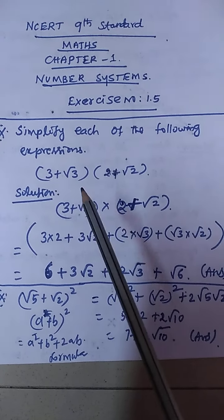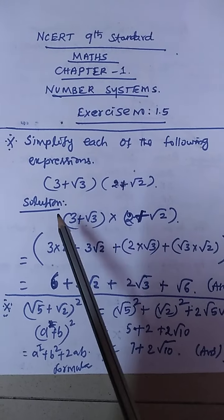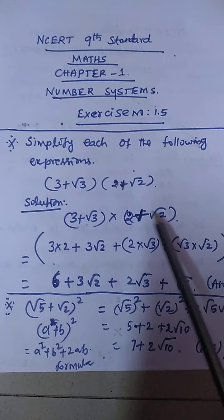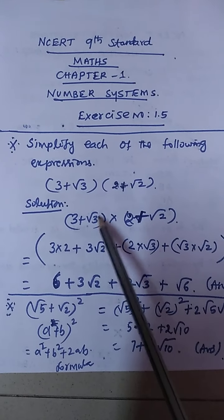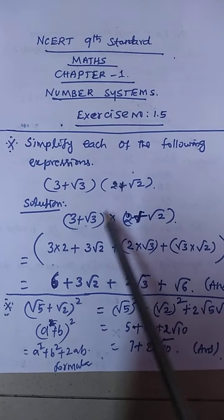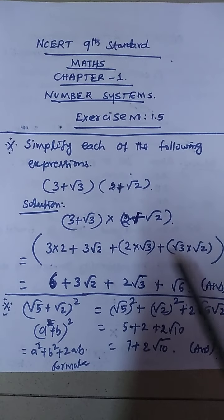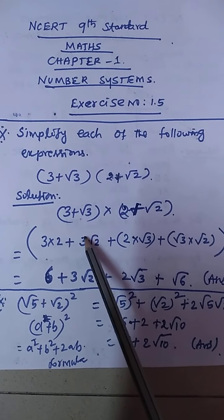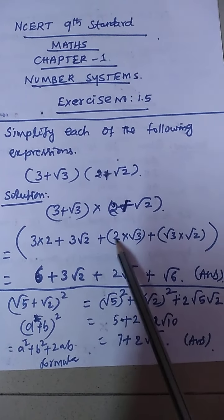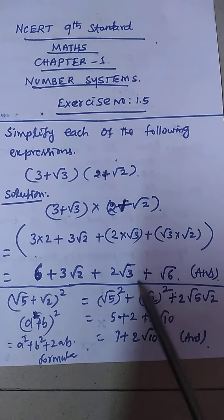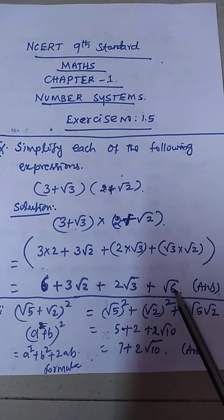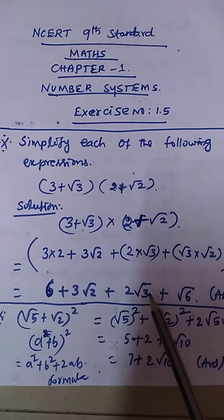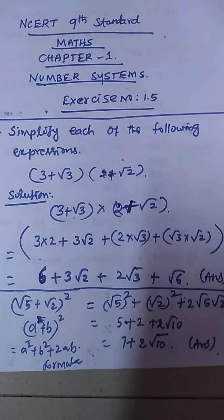Then root 3 into root 2. We multiply each term: 3 into 2 plus 3 into root 2 plus root 3 into 2 plus root 3 into root 2. So the answer is 6 + 3√2 + 2√3 + √6.